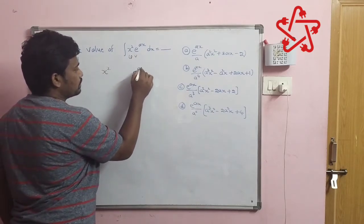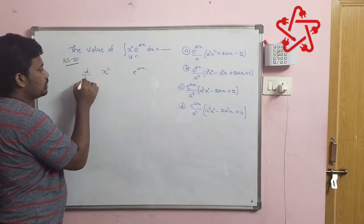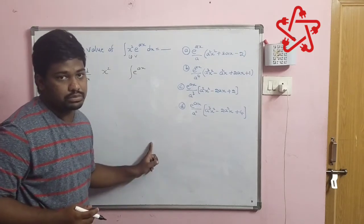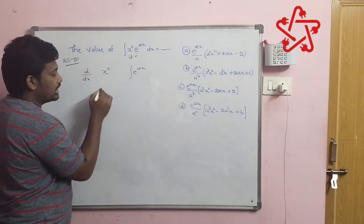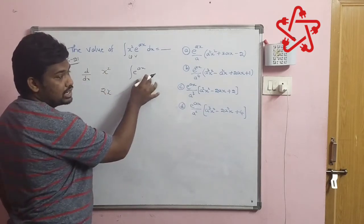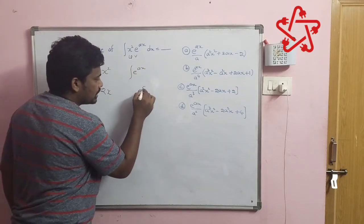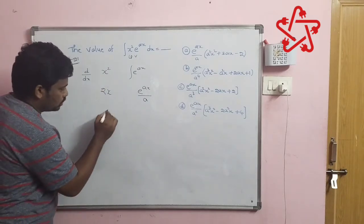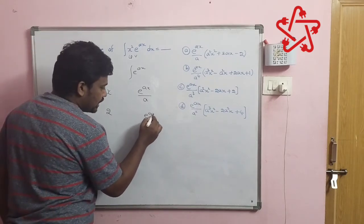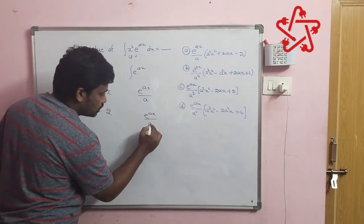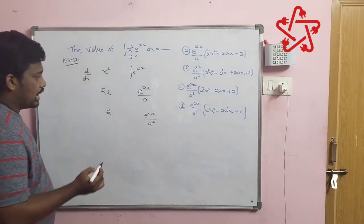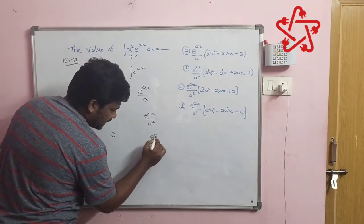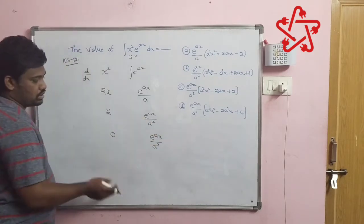We should differentiate this term and we should integrate these terms. If we differentiate x square, we get 2x. If we integrate e power ax, we get e power ax divided by a. Further, if we differentiate 2x, we get 2. If we integrate, we get e power ax divided by a square. Last point, if we differentiate 2, we get 0. If we integrate, we get e power ax divided by a cube.